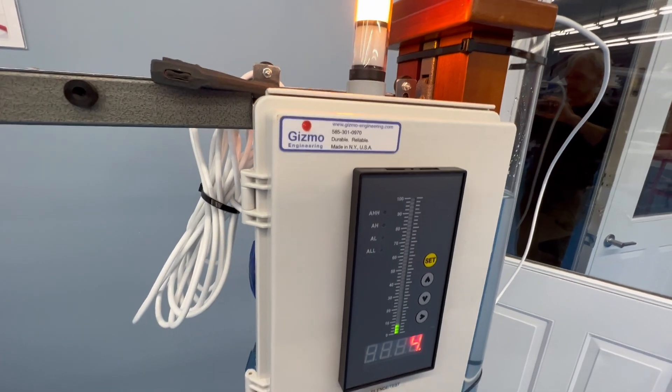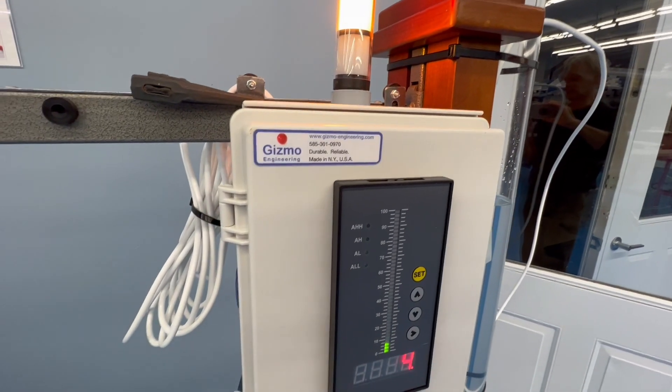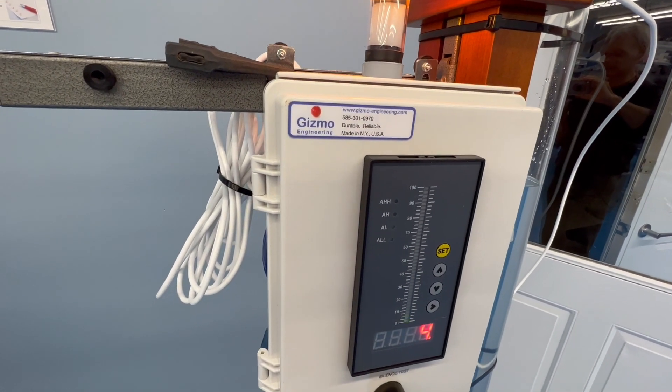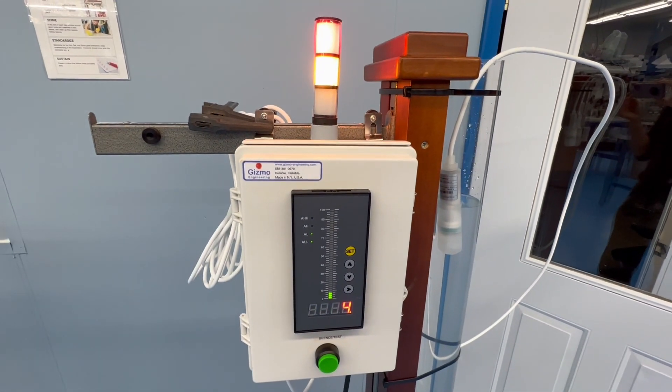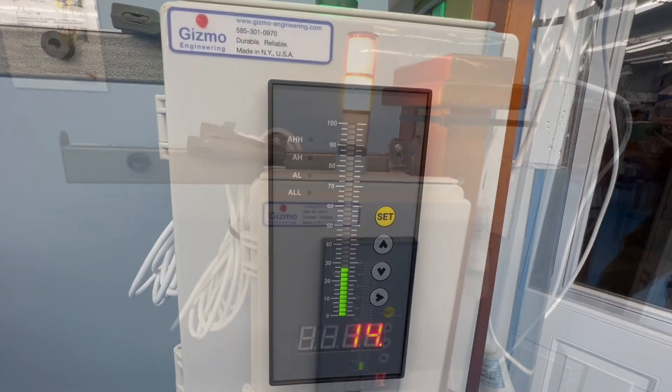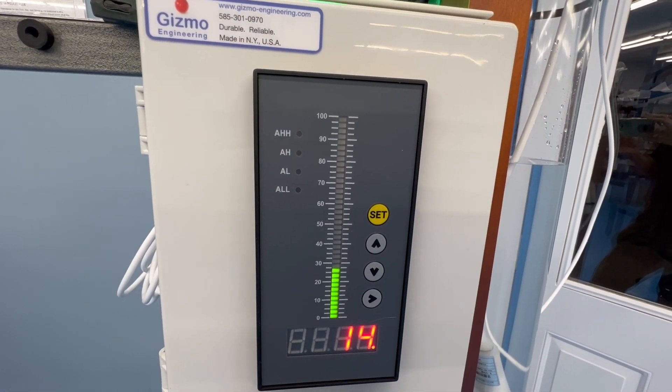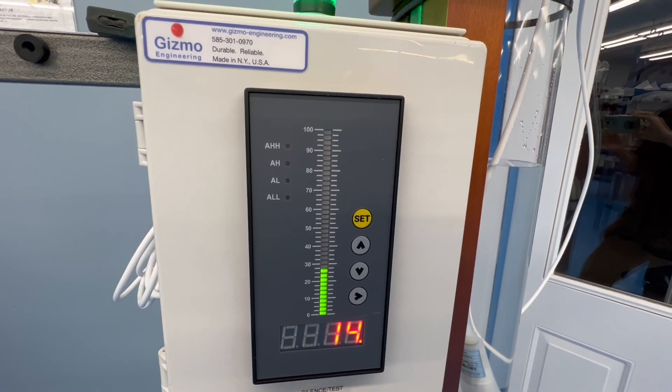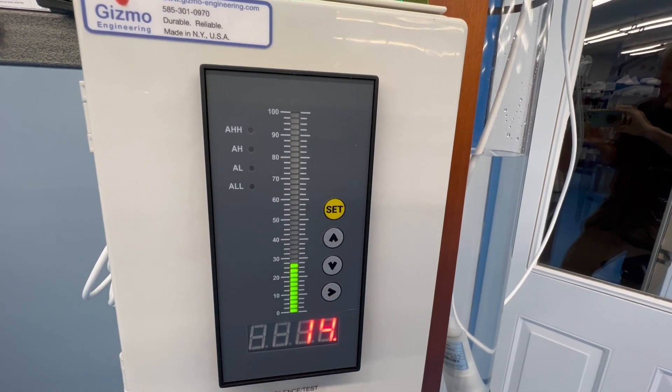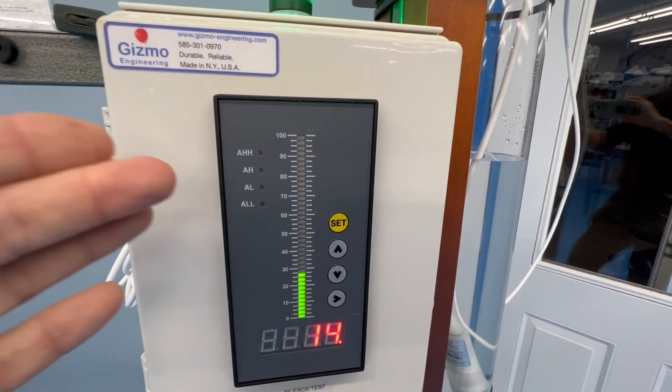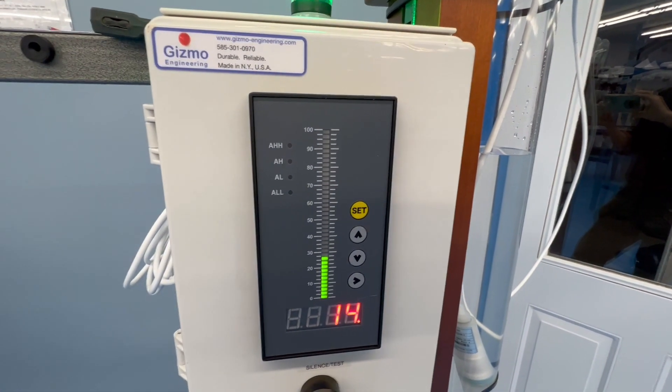So that silence button can be set so that it comes back after 30 minutes or it just rings one time until the level's corrected. The relays can be set up so they can send an email using our email module or a text message or connected to a building alarm system, whatever behavior you want the relays to have, it's possible to do that.